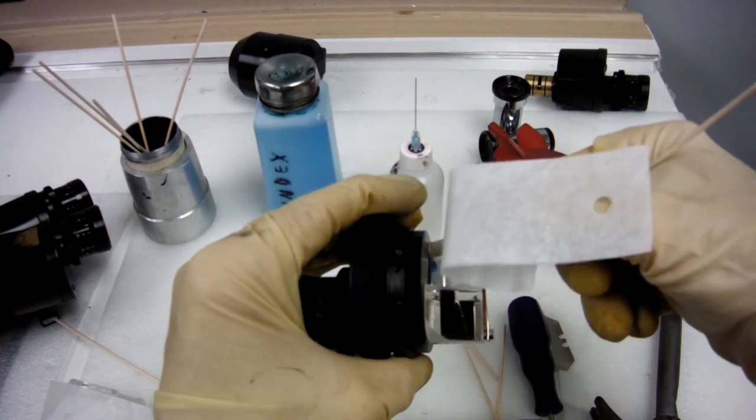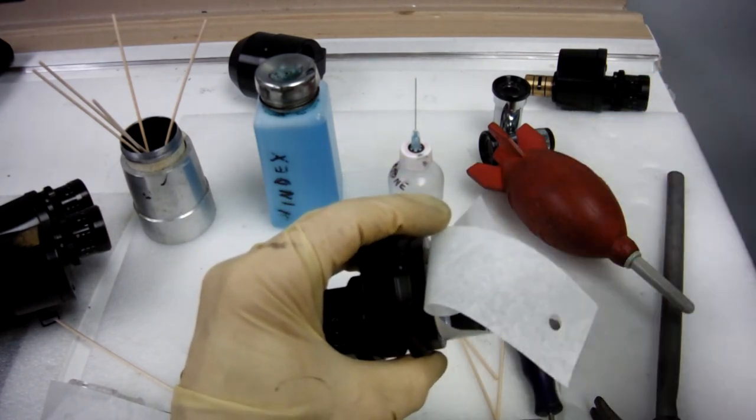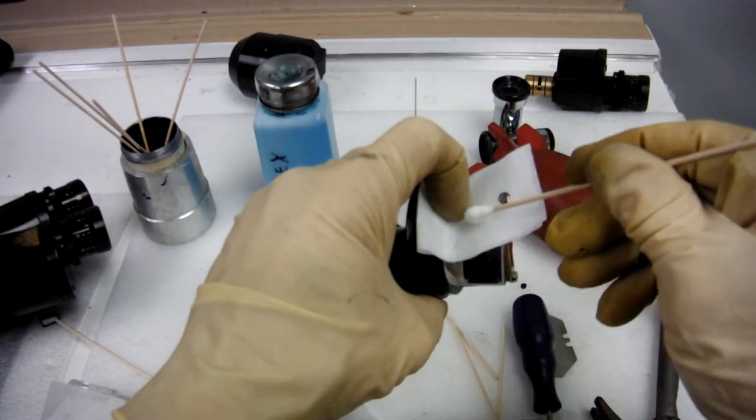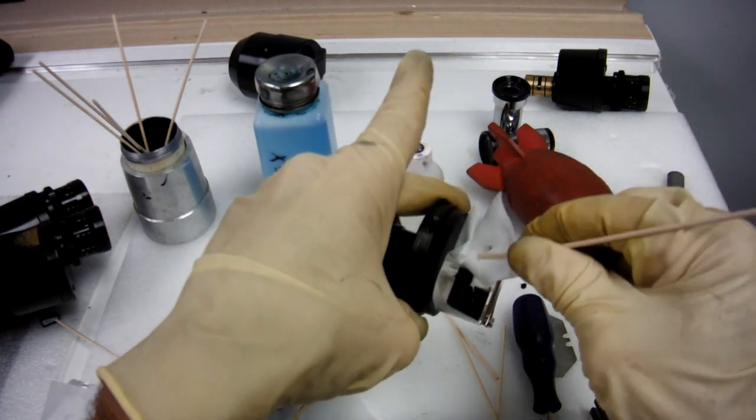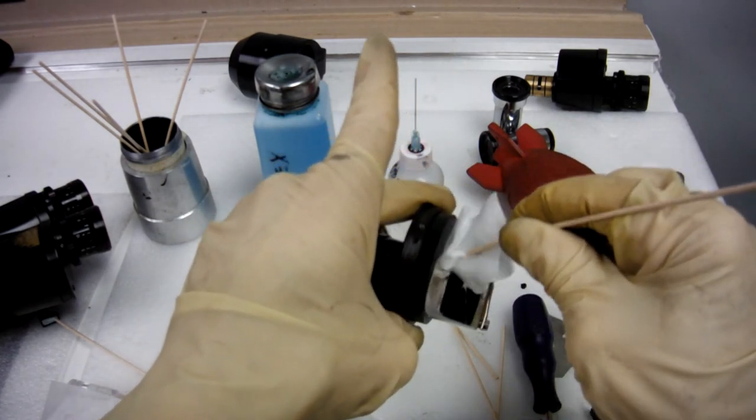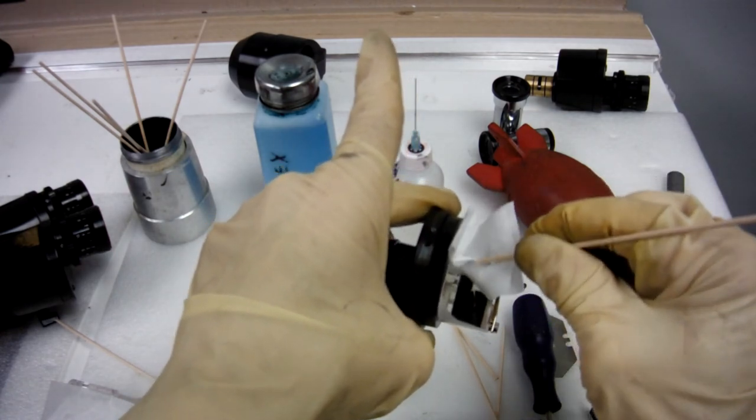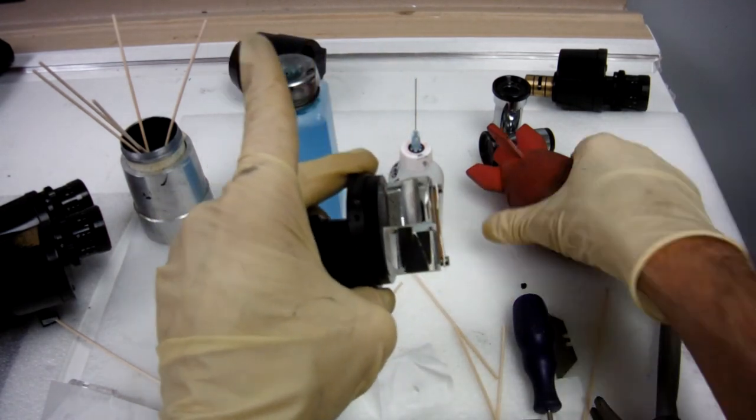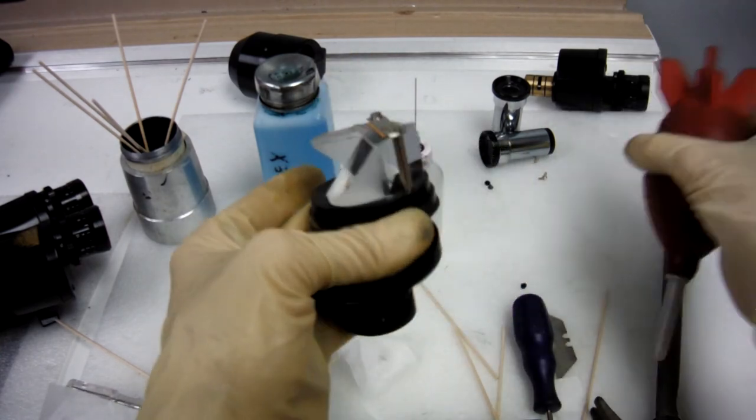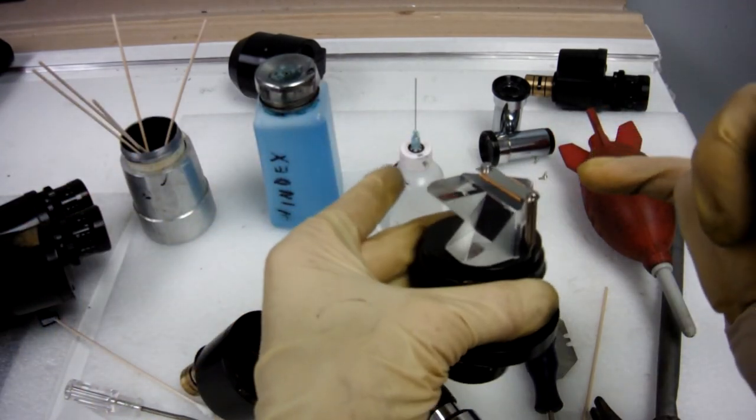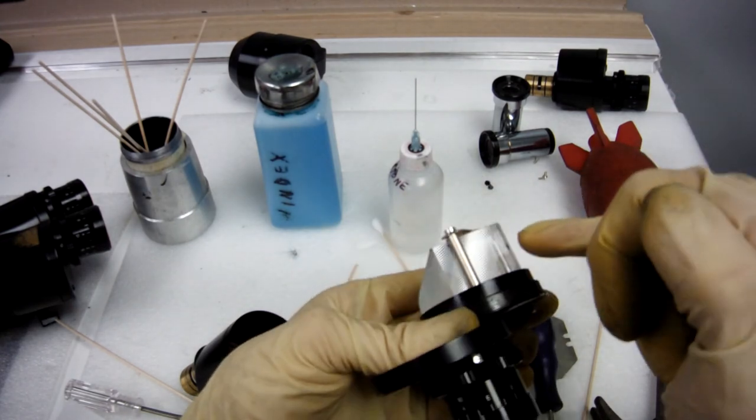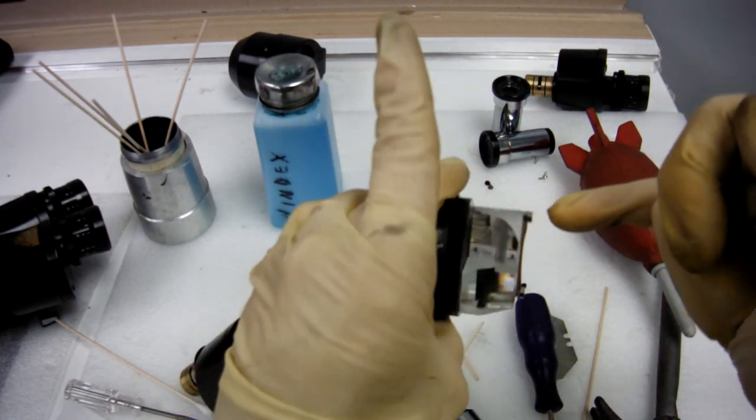Once again, you can use your chin rest paper. Use that paper to get down way deep in that little crevice, and if you clean every prism surface that you can see in there.